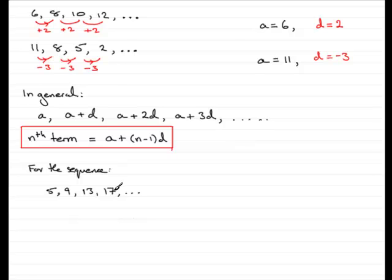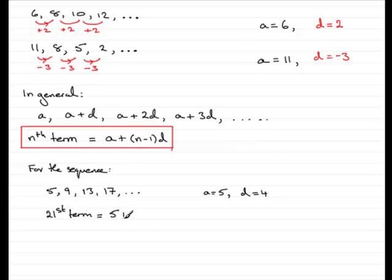We've got a common difference of 4 and the first term is 5. So a is 5 and d is 4. If I wanted to find the 21st term in this particular sequence, I need to set n equal to 21. According to the formula, that's a — which is 5 — plus (n minus 1), so with n equal to 21 we get 20 multiplied by the common difference, which is 4. If you work that out, we get 85. So the 21st term in this sequence would be 85.